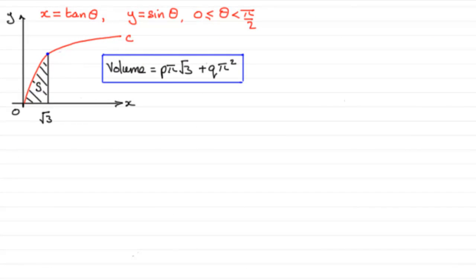Now for this part of the question, we're given this finite region S bounded by the curve C, the line x equals root 3 and the x-axis. And we're told that this area is rotated through 2 pi radians about the x-axis, generating a solid of revolution. And we've got to show that the volume of the solid of revolution is equal to p pi root 3 plus q pi squared where p and q are constants that we've got to find.